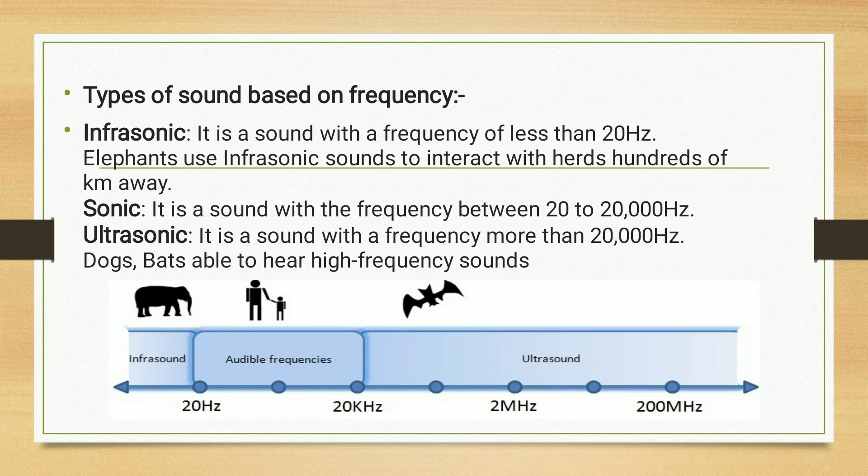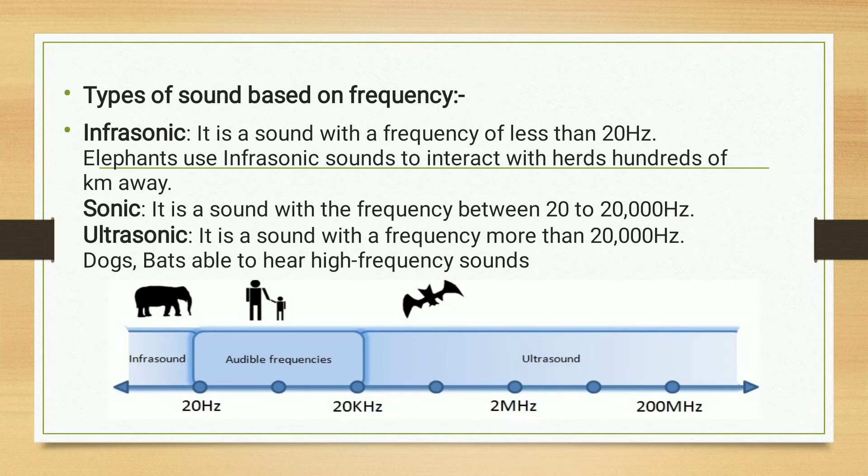There are three types of sound based on frequency: infrasonic, sonic, and ultrasonic. The frequency range for infrasonic is less than 20 hertz. Elephants use infrasonic sound to interact with herds hundreds of kilometers away. The frequency range for sonic is between 20 to 20,000 hertz, and for ultrasonic it is more than 20,000 hertz.